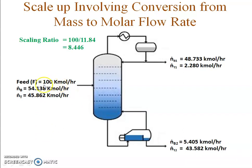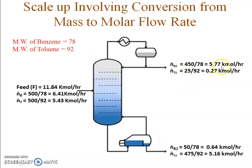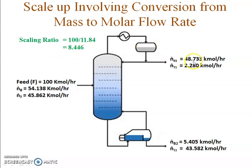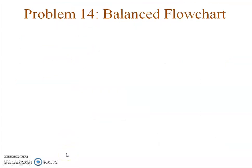The next step is to scale up because the requirement is a feed flow rate of 100 kilomoles per hour. To find the scaled flowchart, I calculate the scaling ratio: new flow rate 100 divided by old flow rate 11.84 gives a scaling ratio of 8.446. Multiplying the old stream values by this ratio — for example, 5.77 × 8.446 = 48.733 kilomoles per hour of benzene in the distillate. This is how we convert a mass-based flowchart to a molar flow rate basis: first convert all mass flow rates to molar flow rates, then scale up or down using the scaling ratio.